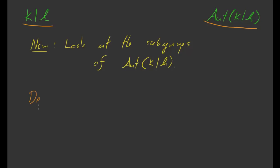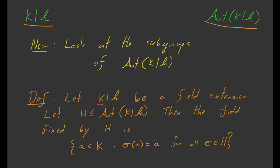So here's what we're going to do — we'll make the following definition. Given the field extension big K over little k, and given some subgroup H of Aut(K/k) — where the less-than-or-equal-to sign means H is not just a subset but actually a subgroup — the field fixed by H is the set of all A in big K such that sigma(A) equals A for every sigma inside of H. In other words, it's the set of all A inside big K that are fixed by every element of H.